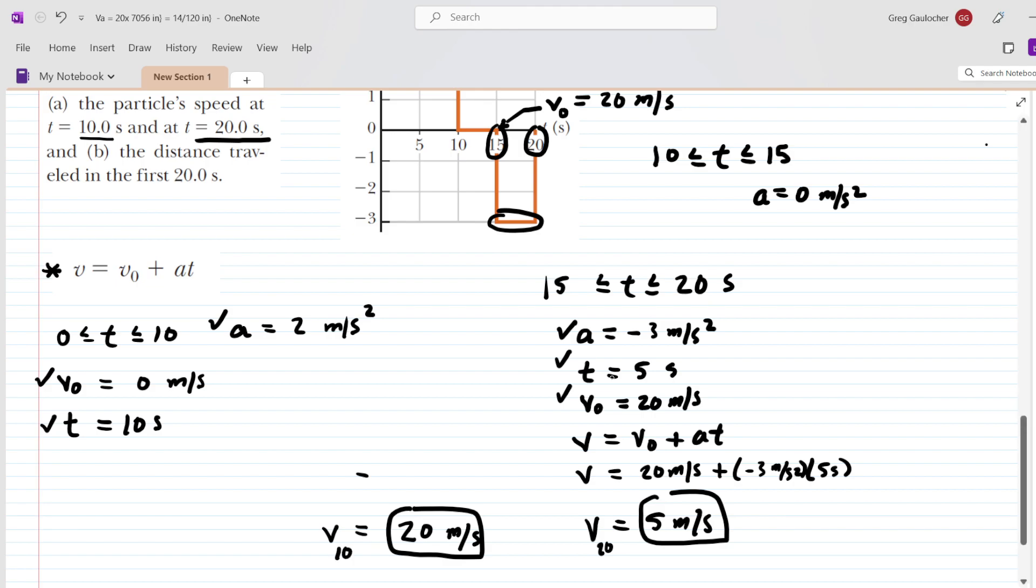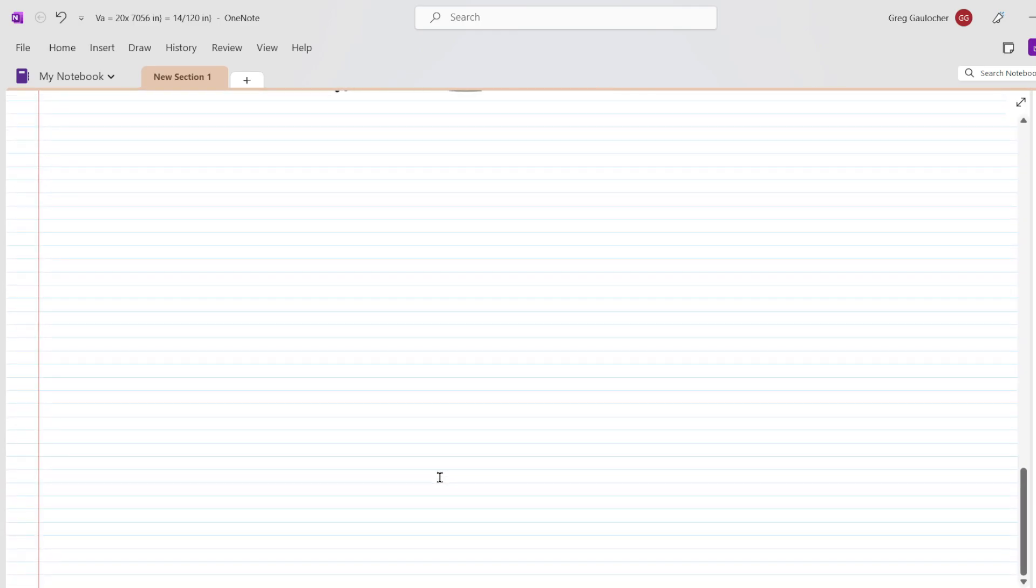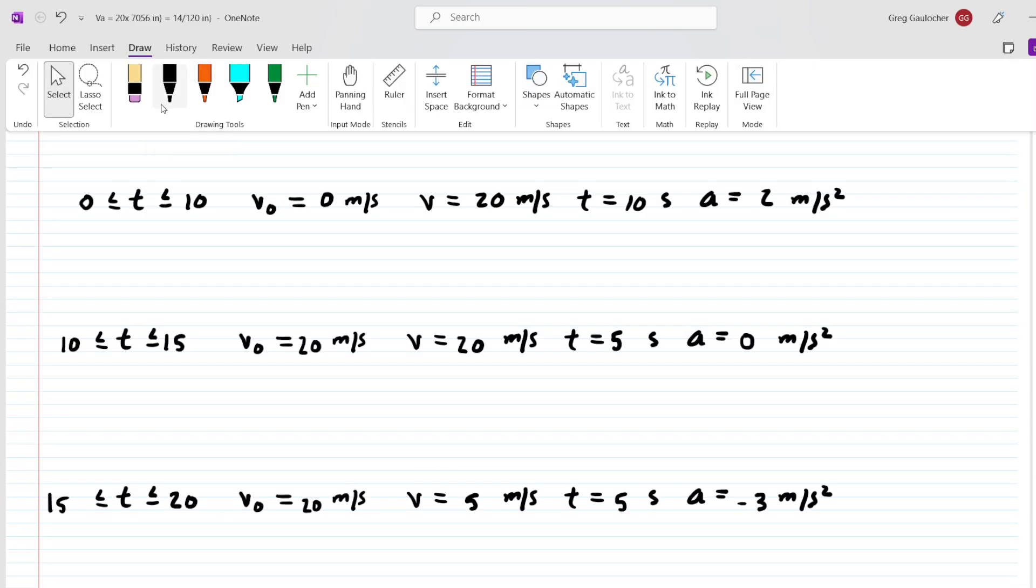So part A is complete. But we also have to calculate the distance traveled in the first 20 seconds. To do that, we're going to summarize some of the data that we've acquired thus far. Here is a summary of the three different time intervals. What we're going to do is calculate the distance traveled by the particle within each of the three time intervals.